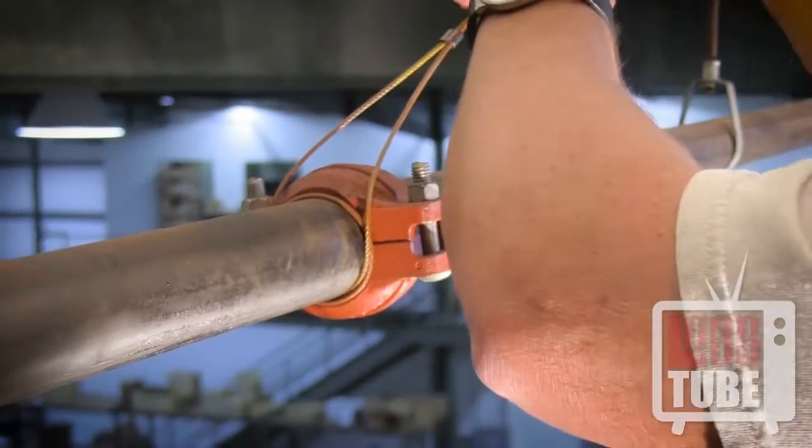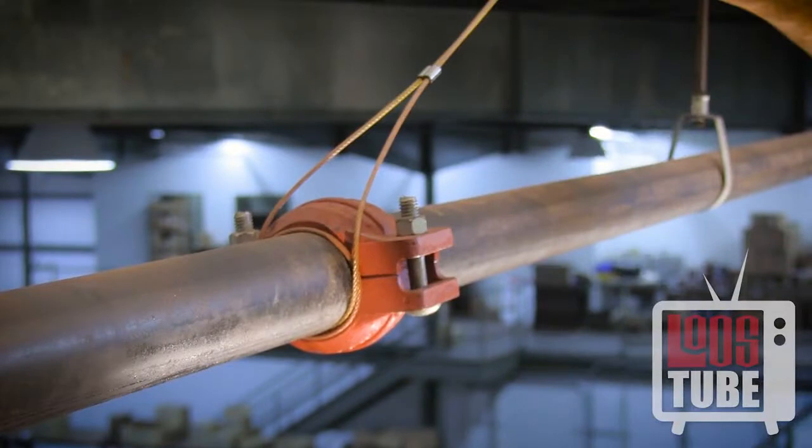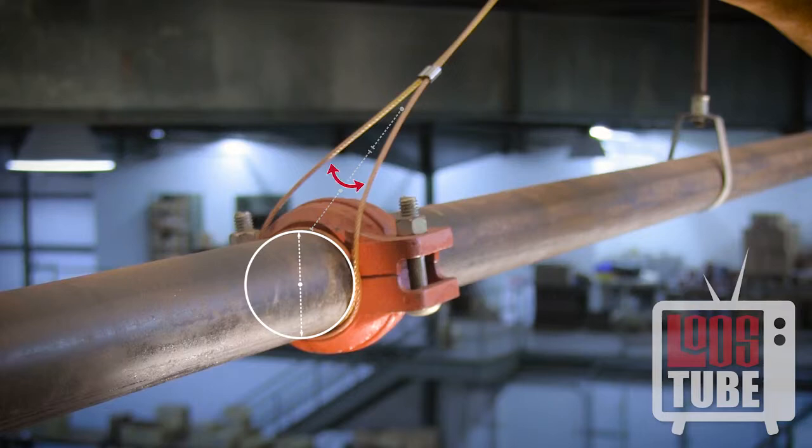Before you swage the fitting, ensure that the sleeve is positioned at a minimum distance of one and a half pipe diameters away from the pipe. This will ensure that the maximum 45 degree angle in the cable is maintained.